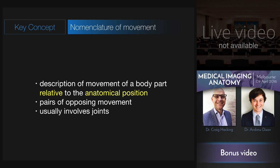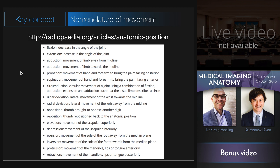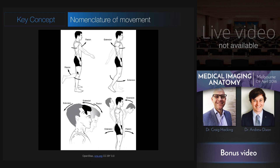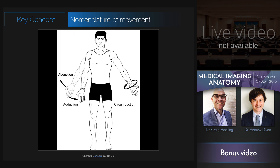Now that we have anatomic positions and terms defined, we can describe the body or parts of the body when they move relative to one another. All movements are described relative to the anatomic position, and all movements have an opposing movement. Flexion and extension of limbs refers to the increase and decrease of a joint angle, usually in the sagittal plane — however, the thumb is an exception. Adduction is moving a limb towards the midline, and abduction is moving it away from the midline. When you combine abduction and adduction with flexion and extension of the shoulder or the hip, you get a movement called circumduction.